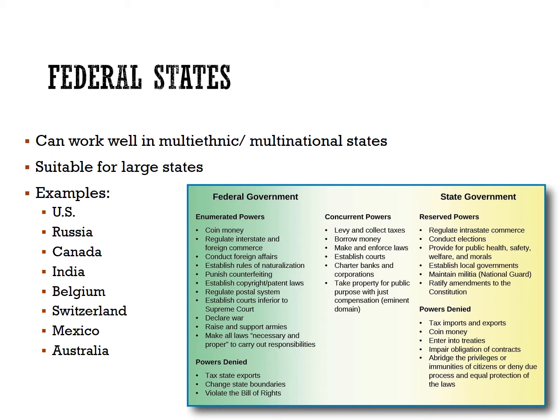Federalism is also a good way to manage large countries. Seven of the eight largest countries by land area — Argentina, Australia, Brazil, Canada, India, Russia, and the United States — are all organized as federal states. Only China continues as a unitary state.